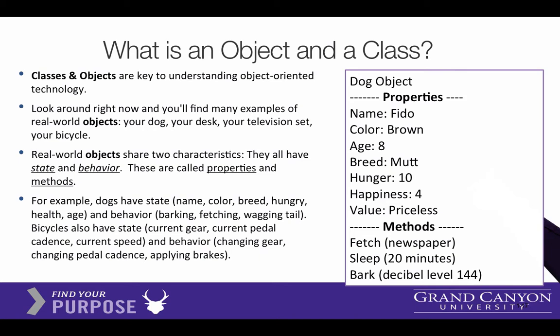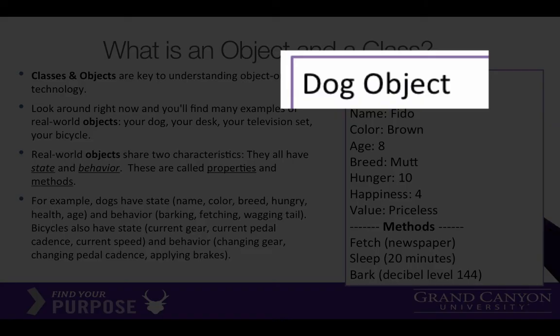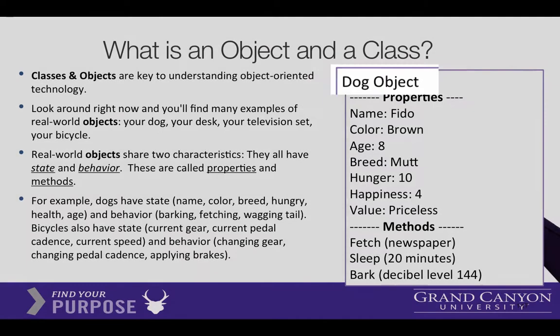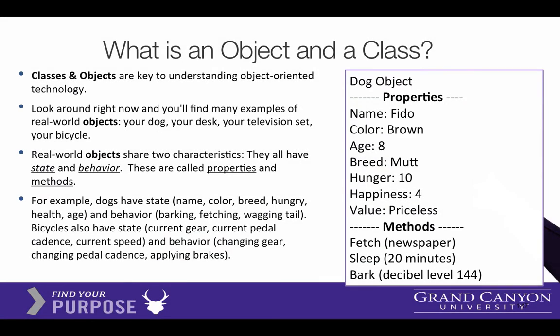We'll start off by using an analogy here of an object like a dog. On the right side here, we've got a dog object. He has properties such as his name, his color, age, breed, hunger, his happiness level, and his value.